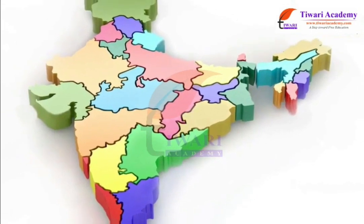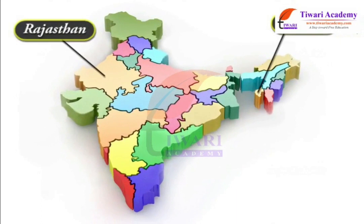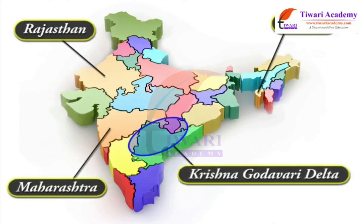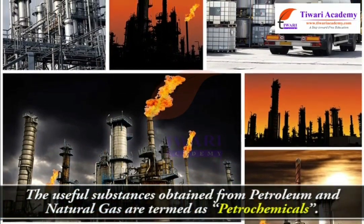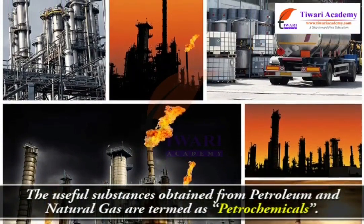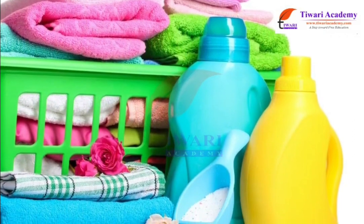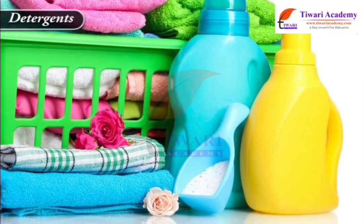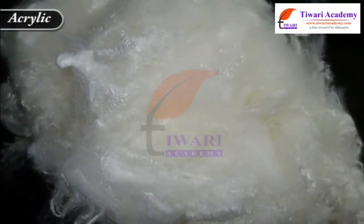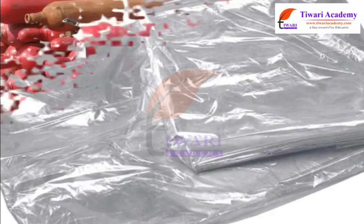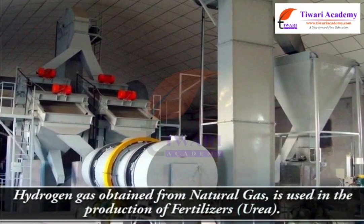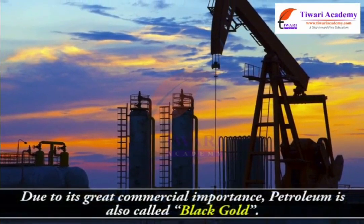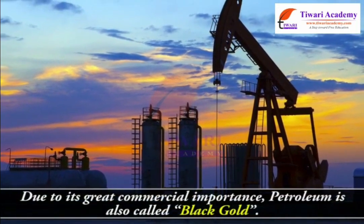In India, natural gas has been found in Tripura, Rajasthan, Maharashtra and in the Krishna Godavari Delta. The useful substances obtained from petroleum and natural gas are termed petrochemicals. Petrochemicals are used in the manufacture of detergents, fibres like polyester, nylon, acrylic, and polythene. Hydrogen gas obtained from natural gas is used in the production of fertilizers. Due to its great commercial importance, petroleum is also called black gold.